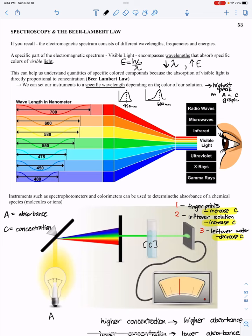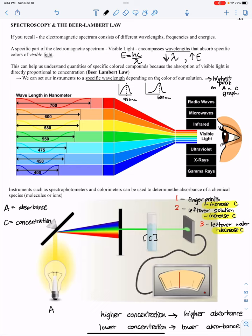If you recall from previous lectures and units, the electromagnetic spectrum consists of different wavelengths, frequencies, and energies. A specific part is visible light, which encompasses wavelengths that absorb specific colors. I want to remind you of an equation from Unit 1: E, energy, equals hc over lambda. This says if I have lower wavelengths, I'll have higher energy. And the opposite, higher wavelengths, lower energy.